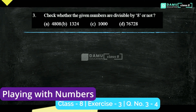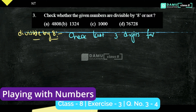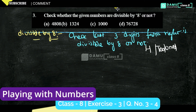In this module, we are going to discuss the third question: check whether the given numbers are divisible by 8 or not. The divisibility rule of 8 is: we have to check the last three digits from the right — that is, the units place, tens place, and hundreds place — and see if that number is divisible by 8 or not.